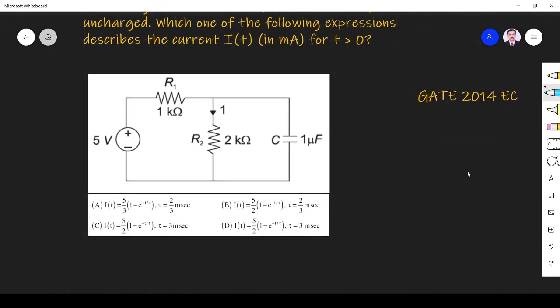So in the figure, capacitor is initially uncharged. So initially uncharged means V(0) is 0, capacitor is not charged, right? Which one of the following expressions describe the current through the capacitor?